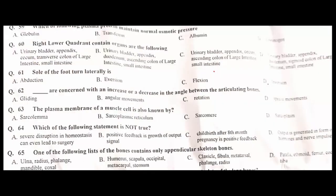The right lower quadrant contains the following organs: urinary bladder, appendix, cecum, ascending colon of the large intestine, and small intestine. C is the correct option.